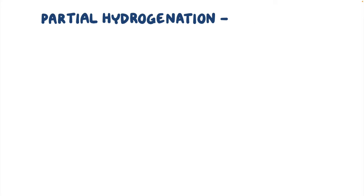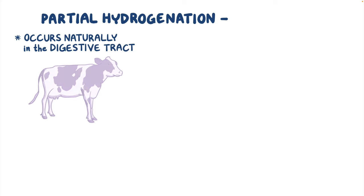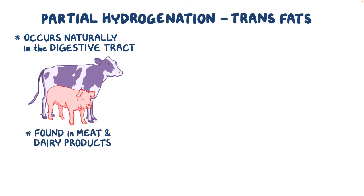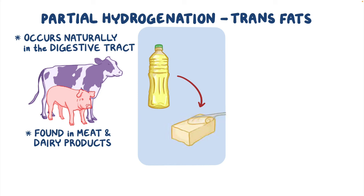Partial hydrogenation is a process that happens naturally in the digestive tract of some animals, like cows and pigs, which is why trans fats can be found naturally in meat and dairy products. Partial hydrogenation is also sometimes used in the food industry, in the processing of liquid oils to make them more solid, which can actually lead to the creation of trans fats. Partially hydrogenated oils have been largely removed from foods in North America and Europe, because trans fats have been associated with coronary heart disease.